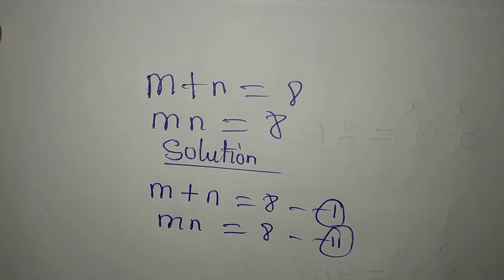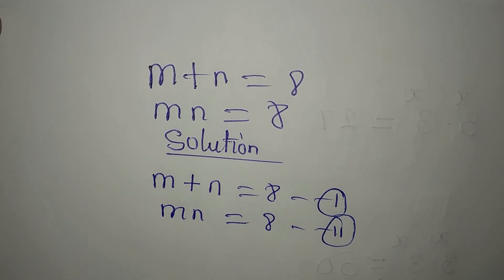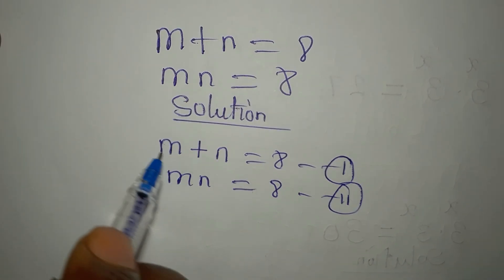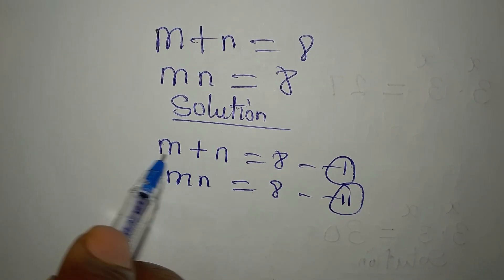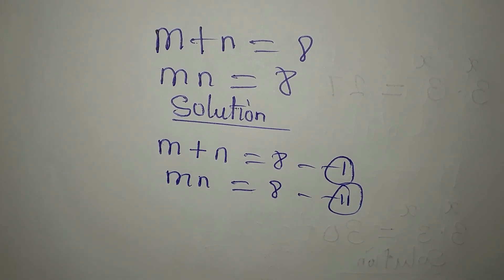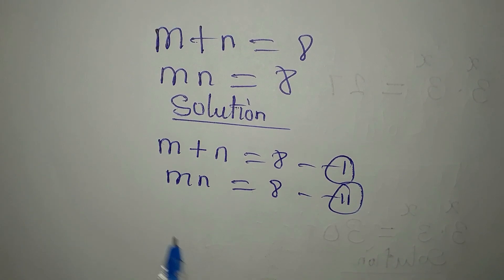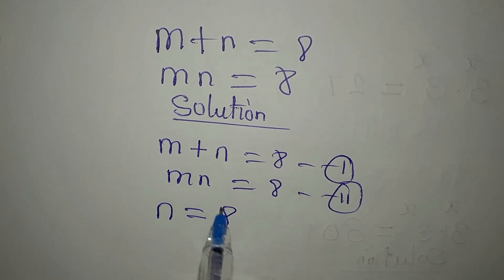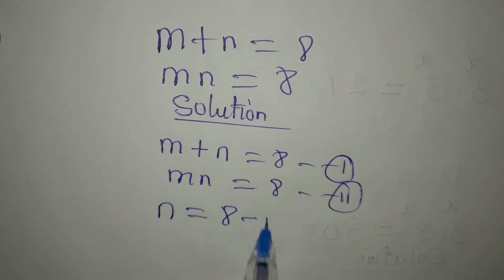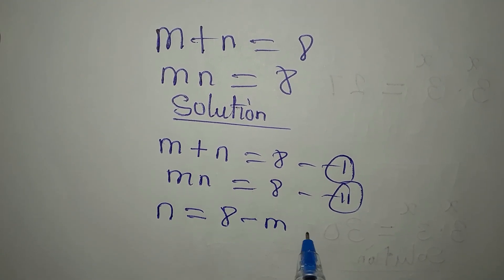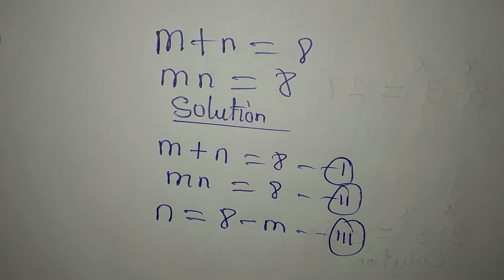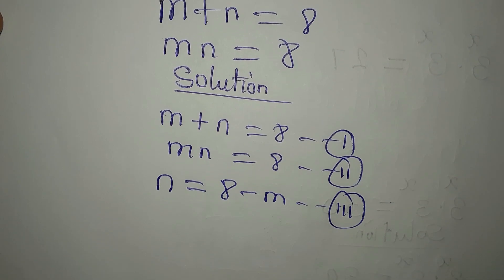Remember that mn is the same thing as m times n. From equation 1 we can decide to make n the subject, so n will now be 8 minus m. We will call this equation 3. Take note of that.